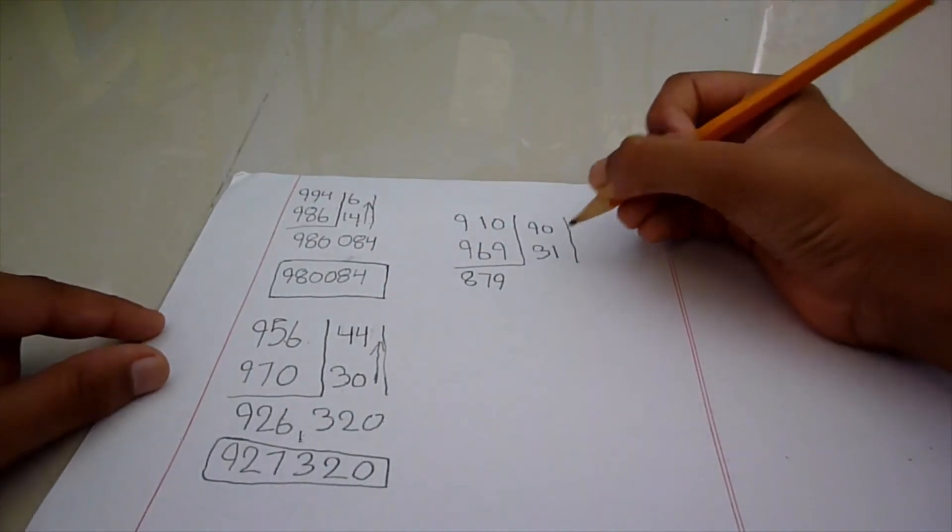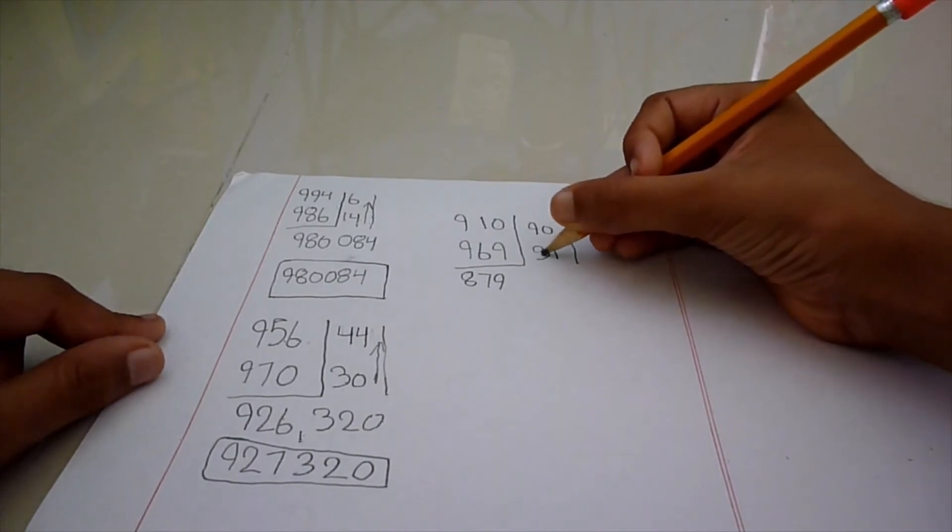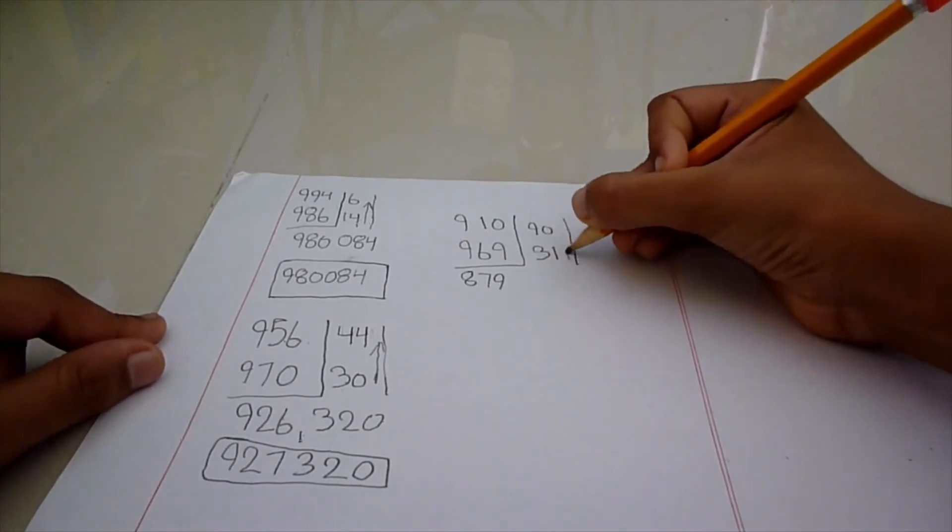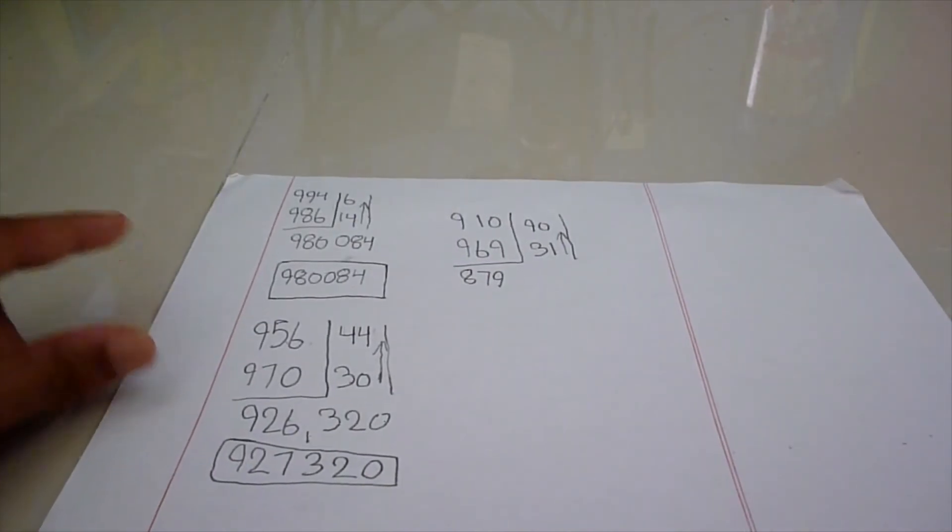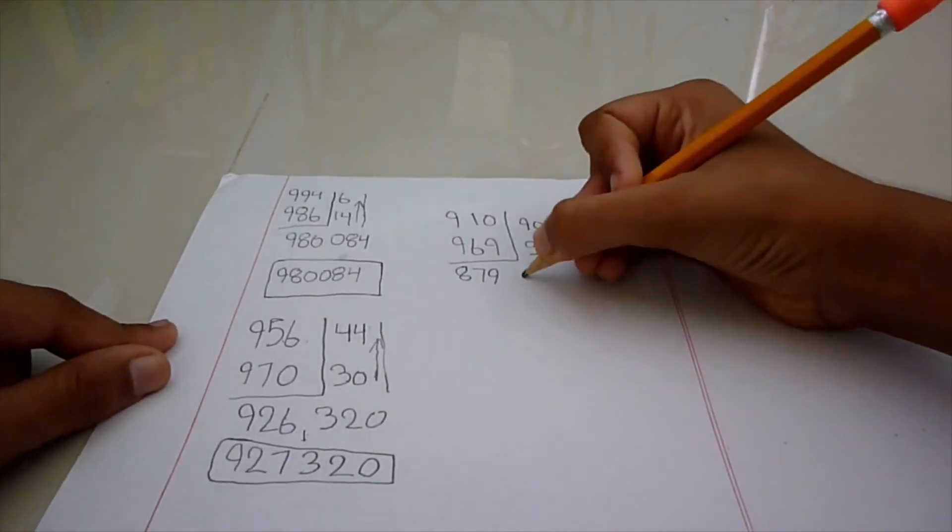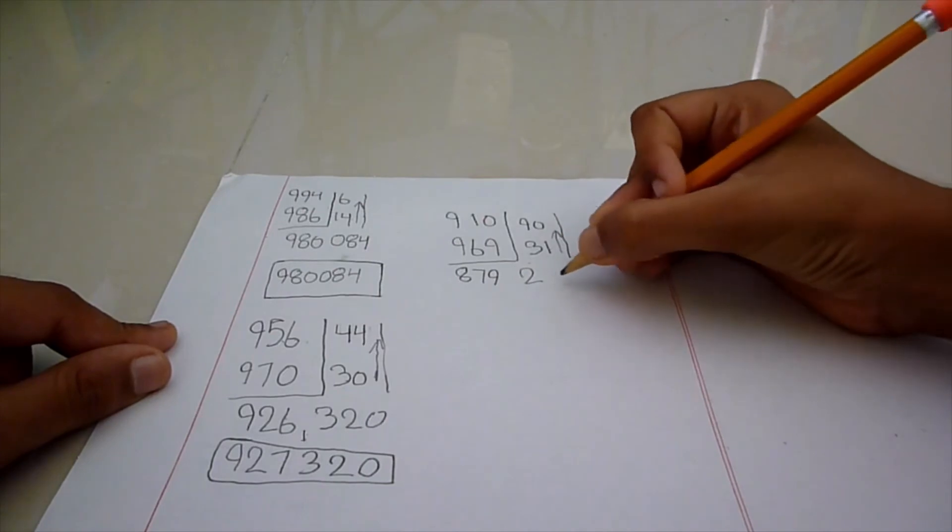Now, after that, you have to multiply 31 times 90. Just have to do it in a rough work here and you will be getting 2790.